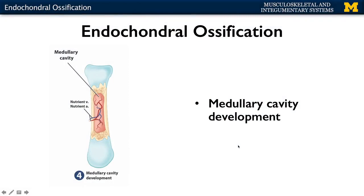Since the primary ossification center is right in the middle of the shaft, you're going to have the development of the medullary cavity. Osteoblasts secrete osseous tissue, but in order for this cavity to exist, you're also going to have osteoclasts working — breaking down not only the cartilage model but also any bone that was previously formed with the primary ossification center.